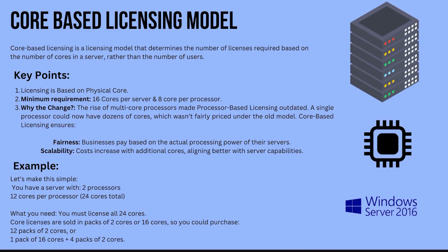Example: you have a server with two processors, 12 cores per processor — 24 cores total. You must license all 24 cores. Core licenses are sold in packs of two cores or 16 cores, so you could purchase 12 packs of two cores, or one pack of 16 cores plus four packs of two cores.